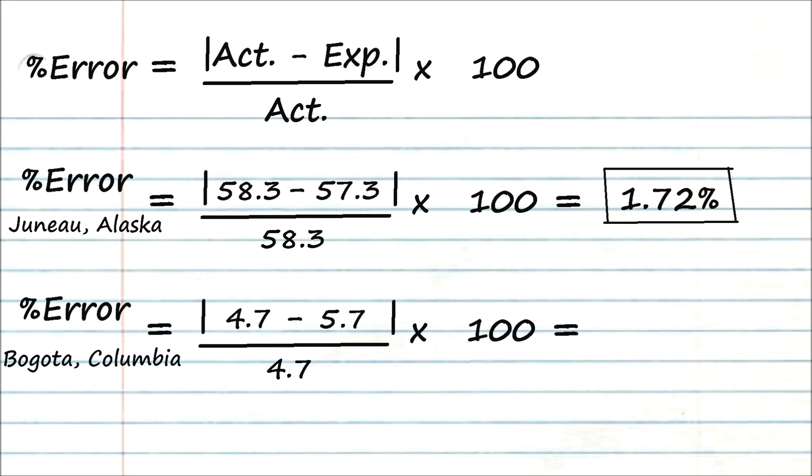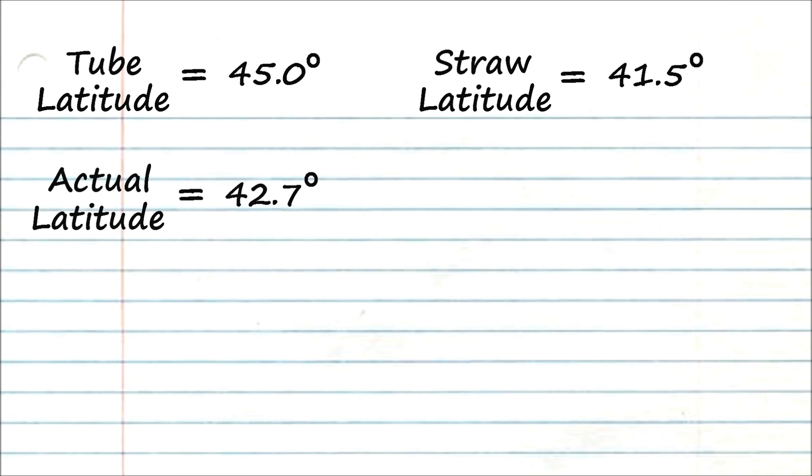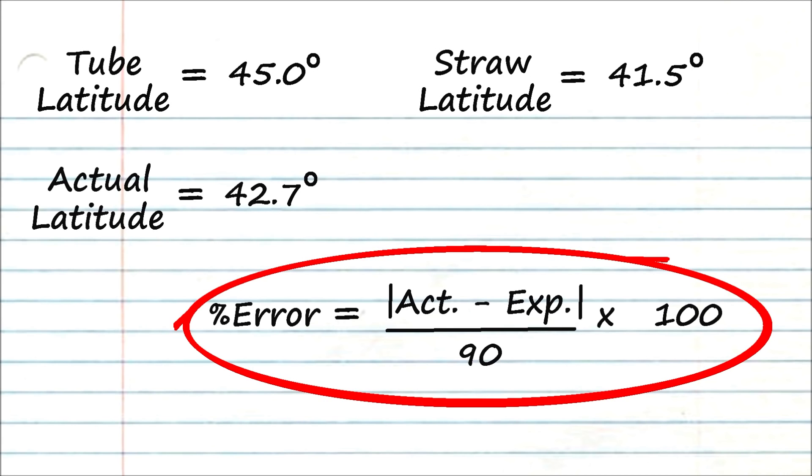They should be the same percent error. They were both just one degree off. Living closer to the equator shouldn't give you a larger percent error. So this equation just doesn't quite work for us. We need to come up with something better. Here's a very similar equation, but instead of dividing by the actual value, we're dividing by 90 each time. This makes sense. The most we could ever be off in our measurement based upon how we made our sextant would be 90 degrees. And if we were off by 90 degrees, well then that would give us 100% error with this equation. So yeah, this is the one that we need to use. This would give the same results for that Juneau and that Colombia example.